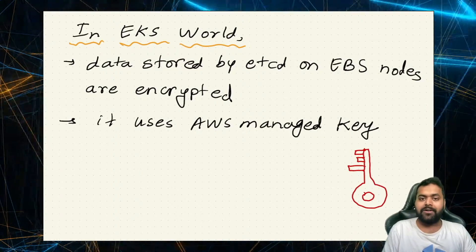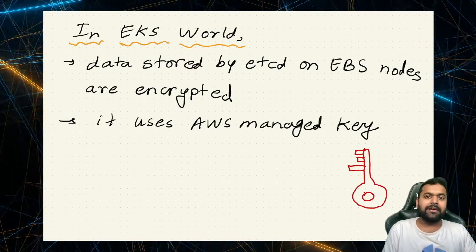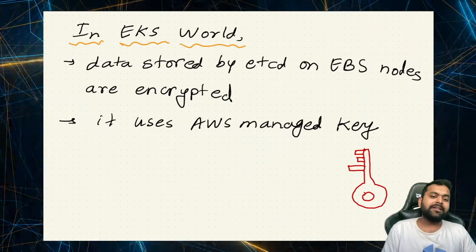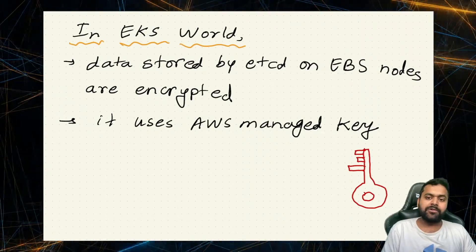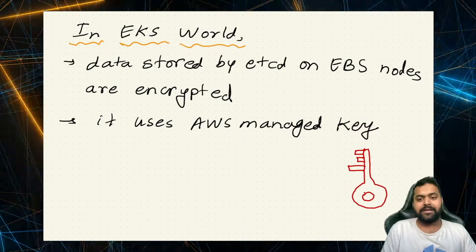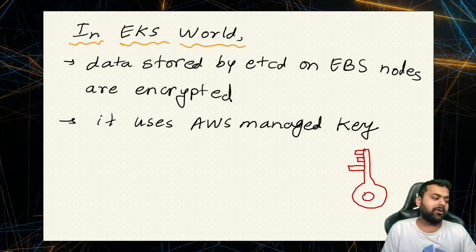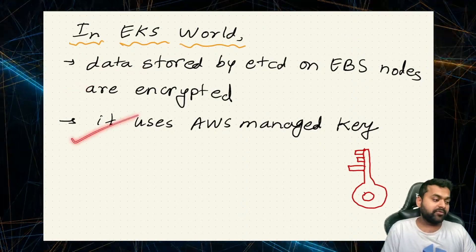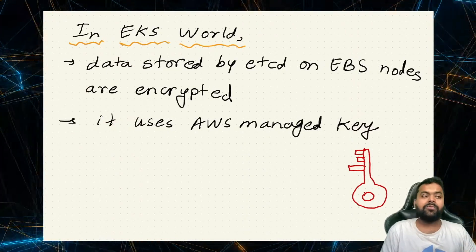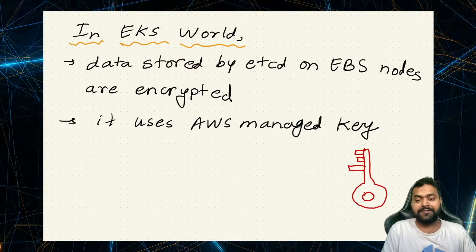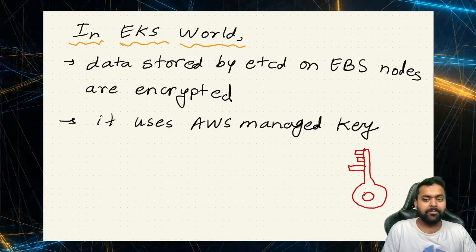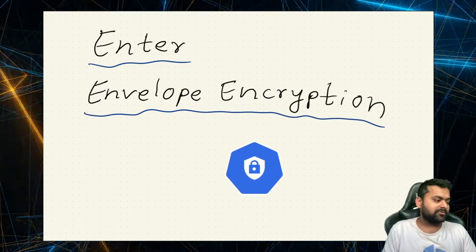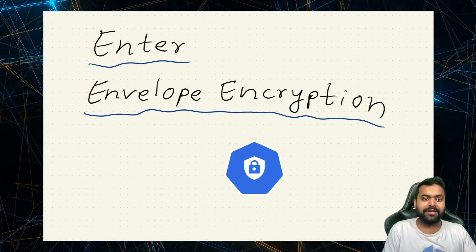Let's go back to EKS. In EKS, we don't really see the control plane, but what's happening behind the scene? Behind the scene, all the data stored by etcd is obviously backed by EBS volumes, and all those EBS volumes are encrypted — they use an AWS managed key to do the encryption and decryption for the data stored on these EBS volumes. But as I said, the defense in depth strategy means we need something more. So let's enter envelope encryption.